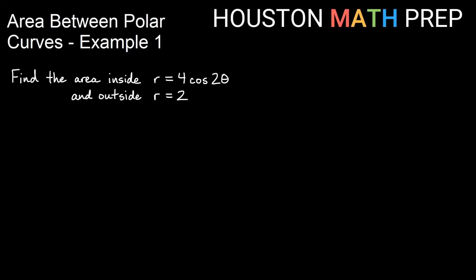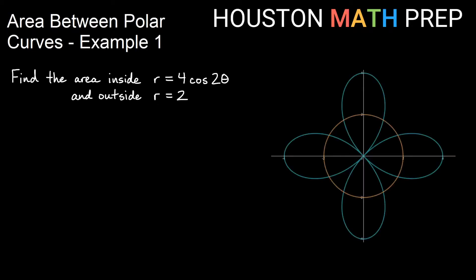Welcome back everyone. Houston Math Prep here for our first example video on area between polar curves. We're going to find the area inside r equals 4 cosine 2 theta and outside r equals 2. Our r equals 2 is the circle you can see here and then our r equals 4 cosine 2 theta is our rose-shaped graph that extends out beyond the circle.